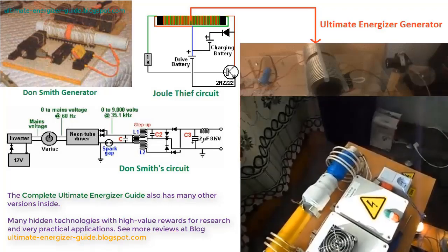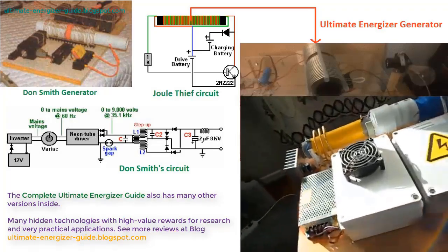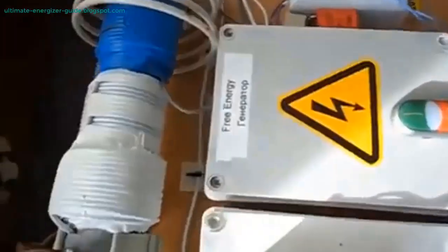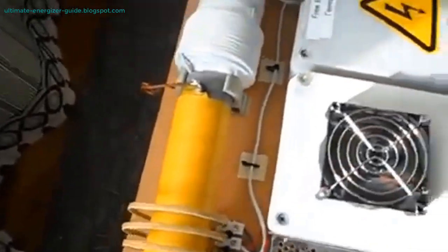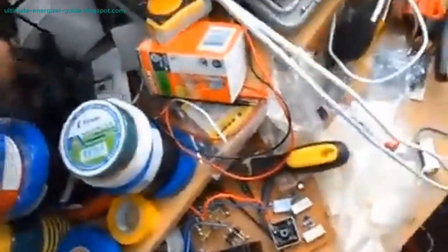The complete Ultimate Energizer guide reveals the secrets of generating electricity using electronic components and coils, with power output depending on the system's expansion. This sets it apart from the Joule Thief circuit and Don Smith's circuit, which are commonly shared online. Moreover, the circuit described in the Ultimate Energizer guide is unique and distinct from the Joule Thief circuit and Don Smith's circuit. The complete Ultimate Energizer guide also includes many other instructions and hidden technologies that have been concealed for many years.